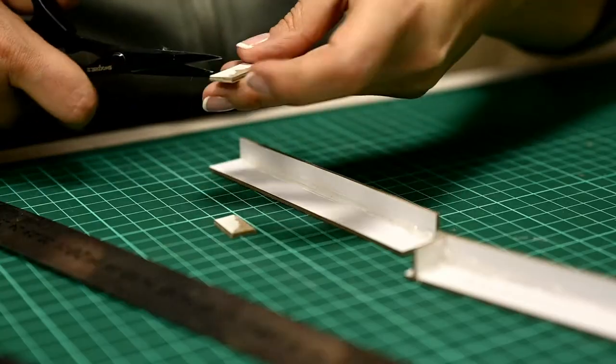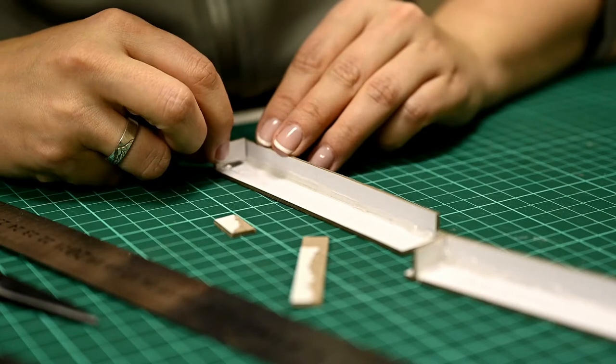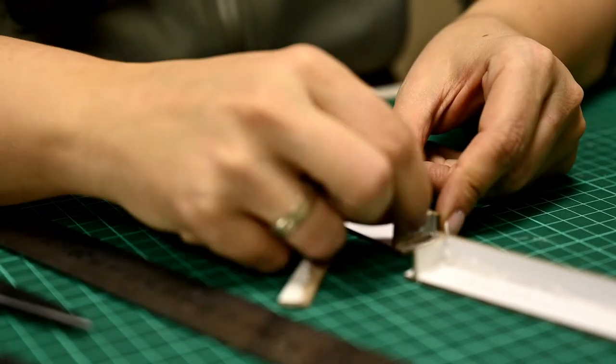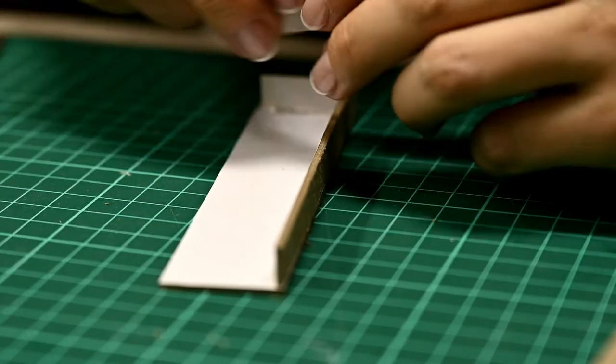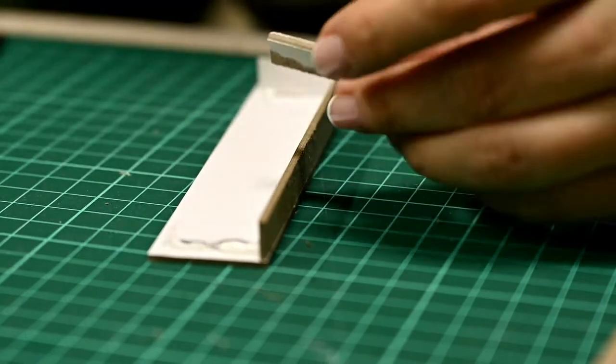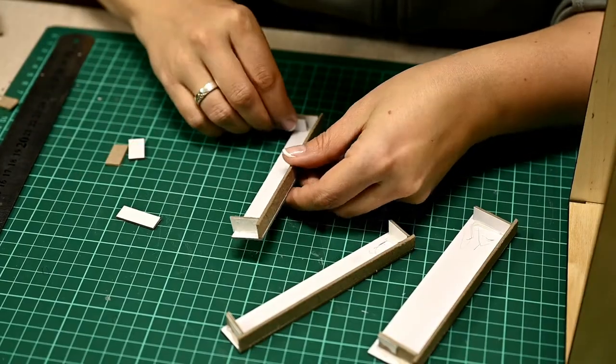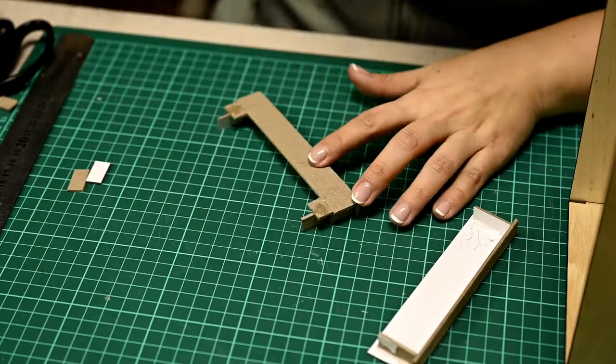To maintain a right angle between them I'm adding some small pieces of cardboard to the sides of the step. Now I'm gluing all the steps together. I also added some pieces of cardboard for supports here.